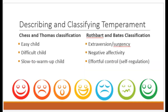Chess and Thomas proposed a classification of temperament based on three types: easy, difficult, and slow to warm up. An easy child is generally in a positive mood, has a relatively consistent or predictable routine, and adapts easily to new experiences. They're generally chill most of the time, and you can predict their needs such as when they'll be hungry or sleepy. If things change, like daylight savings time or switching to a new child care provider, they're fairly good at rolling with it.